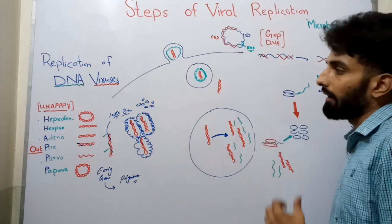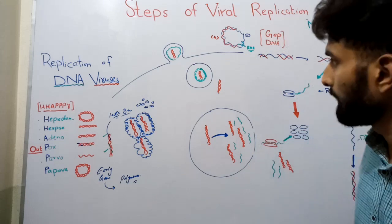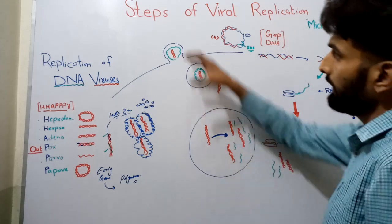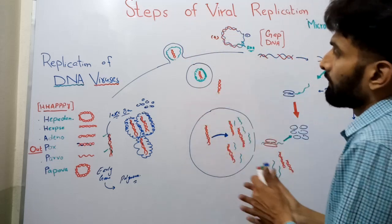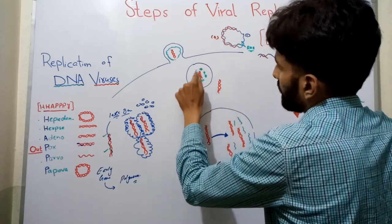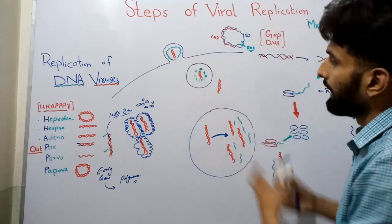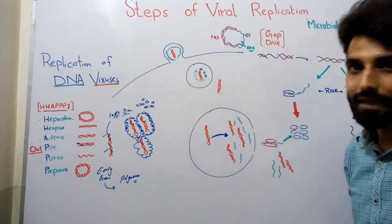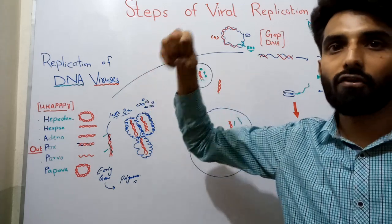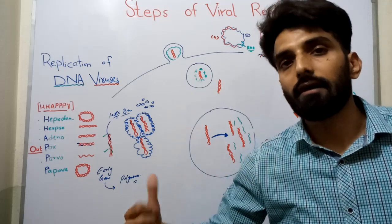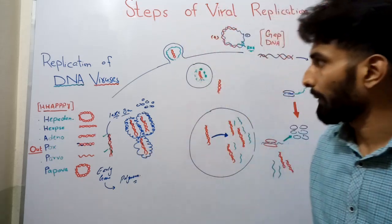Now let's talk about the DNA viruses that enter the nucleus and then replicate to produce new copies. Here you can see a virus has attached, penetrated, and is entering into the cytoplasm. Because of the endosomal and lysosomal enzymes, the capsid will be digested and the genome will be released. All four processes — attachment, penetration, replication, and assembly — have been discussed in my previous video, Steps of Viral Infection.